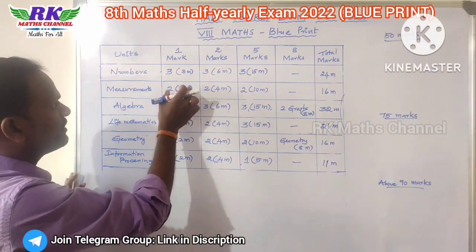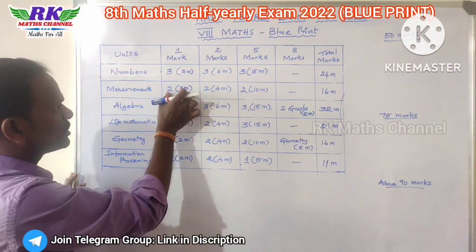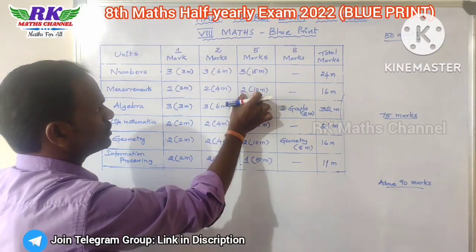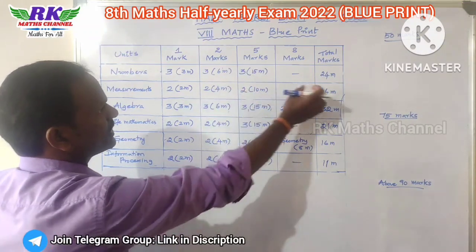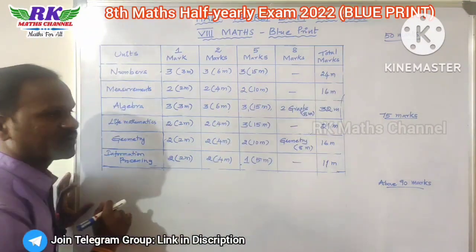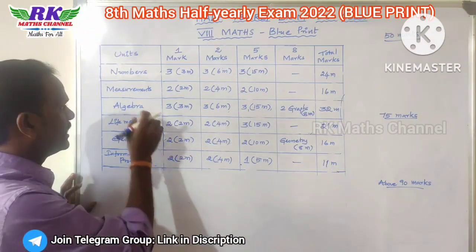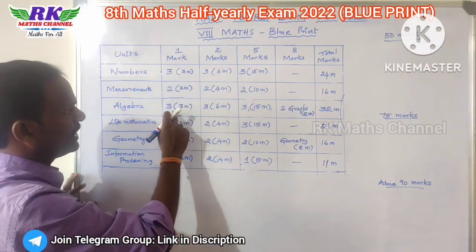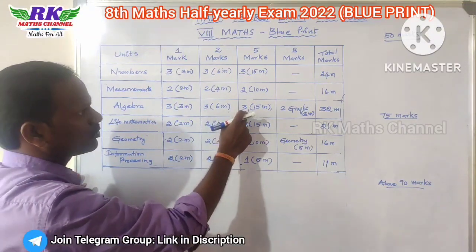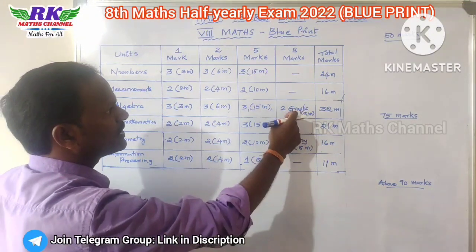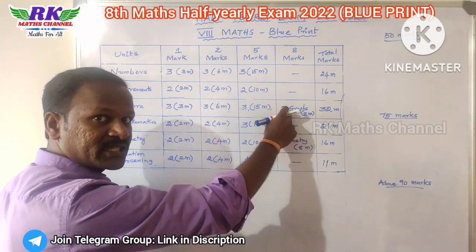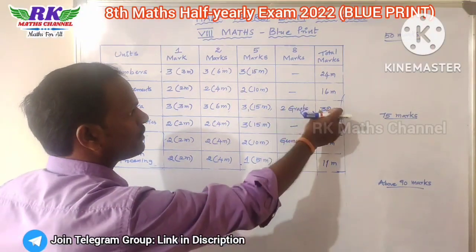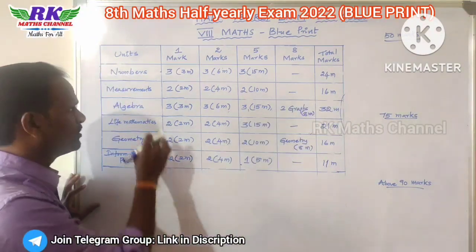You can see Measurements. There are bits for one mark, two marks — two questions. Five marks — two questions. In the second chapter, there are 16 marks. In the first chapter there are also graphs — linear graphs. The total for the third unit is 32 marks.